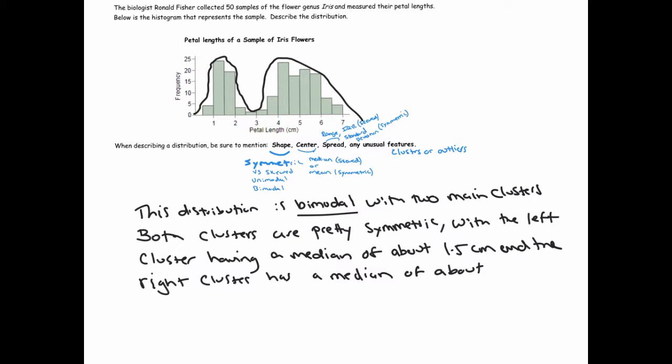I've talked about shape and centers, so let's talk about spread. The overall range for all the flowers - remember range is highest minus lowest - the overall range is about, I'm using nuanced language because we don't know the exact details, but it looks like we've got 7 at the high end and 0.5 at the low end, so maybe about 6.5 to 7 centimeters.